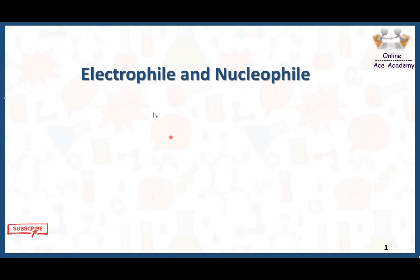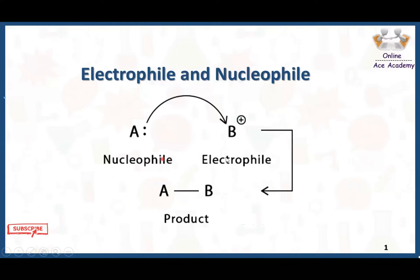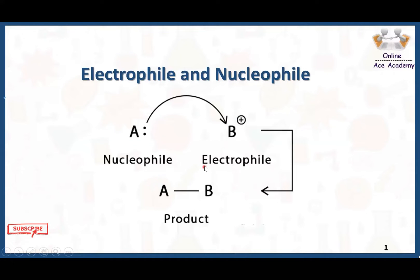In today's video we are talking about electrophile and nucleophile. Electrophile and nucleophile are two types of chemical species that donate and accept electrons to form a chemical bond. The reaction mechanism occurring between electron donor and acceptor is best described by the electrophile and the nucleophile. Electrophile and nucleophile were first described in 1933 and these replace the older terms such as catanoid and aninoid.